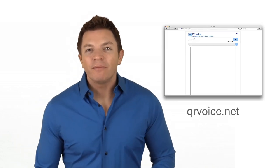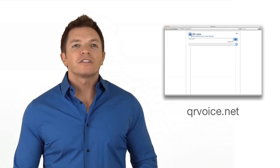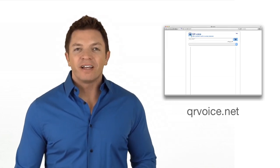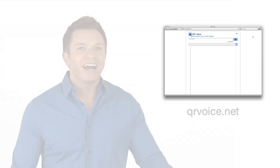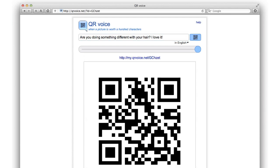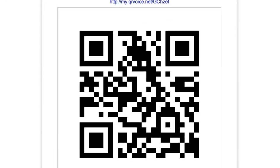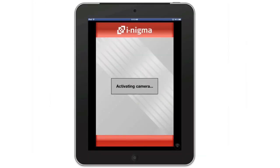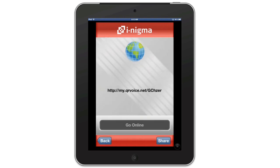QRvoice.net is a website that with one click will turn what you type into audio and gives you a QR code. You've got to see this. I'll type something in and click the button. Instantly, a QR code is generated. When scanned, the code takes me to a URL where a computer voice speaks what I typed. Are you doing something different with your hair? I love it.